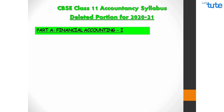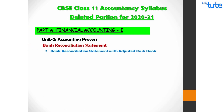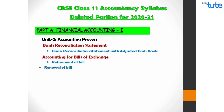Firstly, under Part A Financial Accounting 1, in Unit 2 Accounting Process, we have the topic Bank Reconciliation Statement. The subtopic Bank Reconciliation Statement with Adjusted Cash Book has been deleted for this year. Also under the topic Accounting for Bills of Exchange, Retirement of Bill and Renewal of Bill have been deleted.